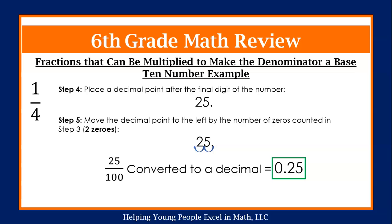Because we counted two zeros in the denominator, that is how many times we are going to move our decimal point to the left. We move it one time. The decimal point is between two and five. We move it one more time and the decimal point is in front of the two. So 25 over 100 converted to a decimal is equal to 0.25.